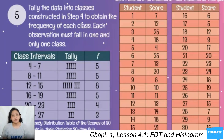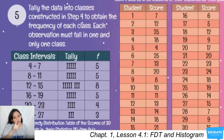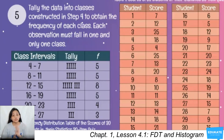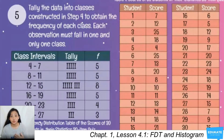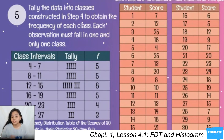For example, the first student has a score of 7 — it falls in the interval 4 to 7, so mark one tally there. Continue this for all 30 students. After tallying, count the marks: 4–7 has 5 tallies, 8–11 has 5, 12–15 has 8, and so on. Make sure the total frequency equals the total number of data points — in our case, the frequencies must sum to 30.